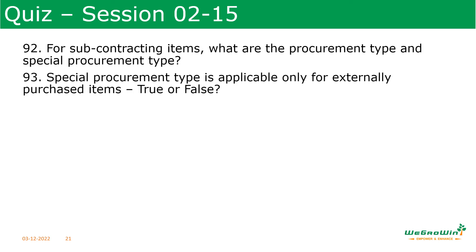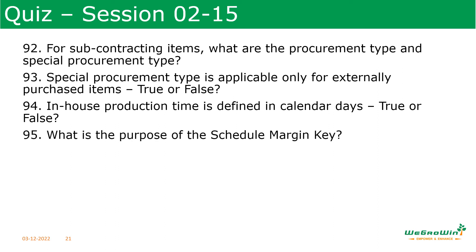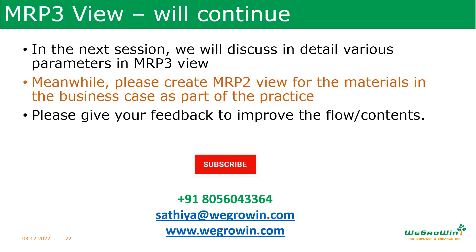For subcontracting items, procurement type and special procurement type are used. Special procurement type is only for external purchase items. In-house production time — is it defined in calendar days? True or false. Schedule margin key — what is its purpose? Safety stock purpose. Service level and safety stock — are they the same? In the next session, MRP3 discusses various parameters.